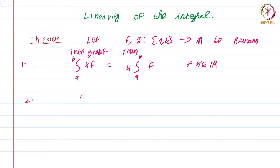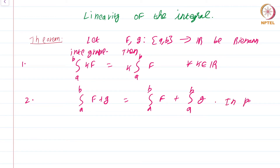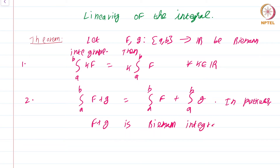Two: the integral from a to b of f plus g is equal to the integral from a to b of f plus the integral from a to b of g. In particular, f plus g is Riemann integrable. So, the sum of two Riemann integrable functions is indeed Riemann integrable, and not only that — the integral of the sum is the sum of the integrals, as you would expect.